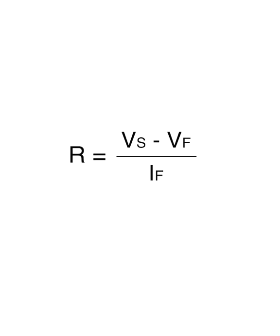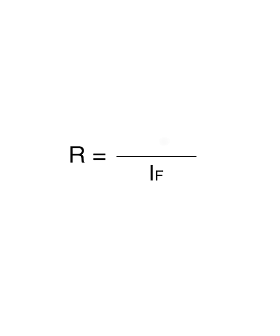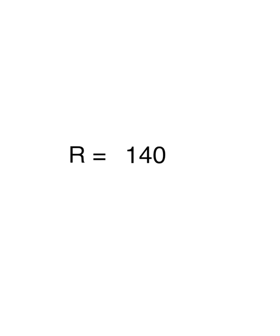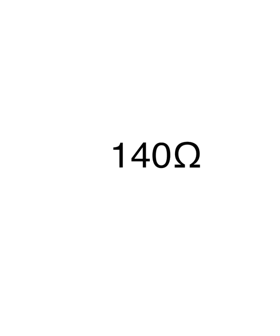In any case, the equation is pretty simple. Subtract the forward voltage from the supply voltage, then divide that result by the forward current. That final number is your ideal resistance value in ohms.